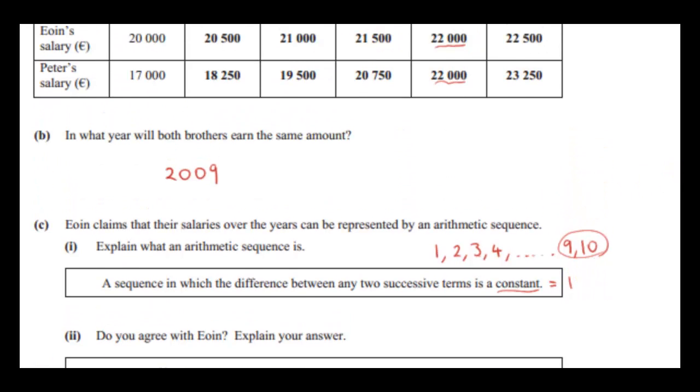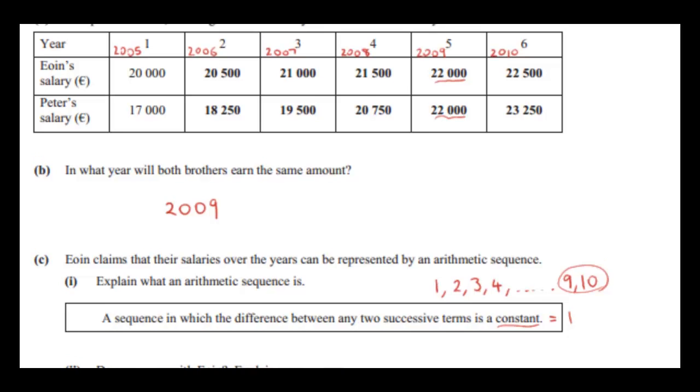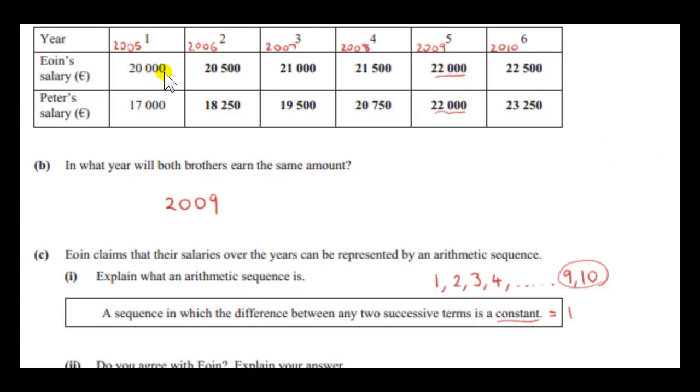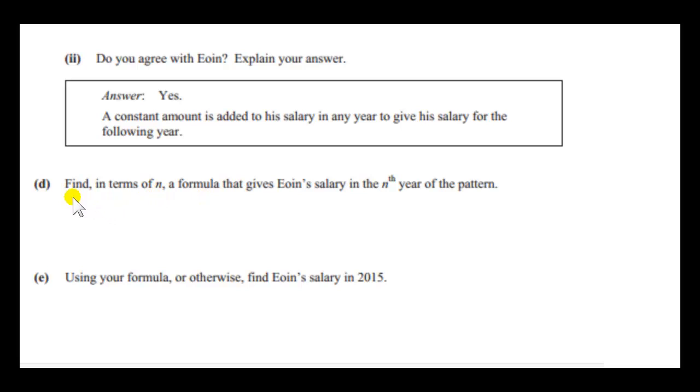Now in the examples that we just saw, for example Owen's salary, the constant is 500 euros. If we get the difference between this term and this term, these are two successive terms in the sequence that gives Owen's salary. Well, we get 500. And if we take any other two successive terms, the difference is also 500. So the difference is constant.